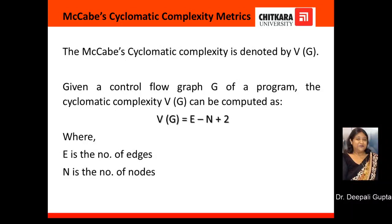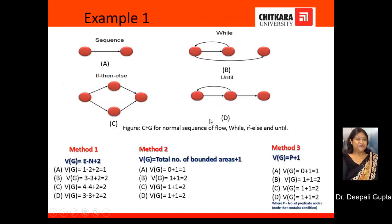Given a control flow graph G of a program, the cyclomatic complexity is denoted by V(G), which can be computed as V(G) = E − N + 2, where E is the number of edges and N is the number of nodes. We will compute the value of V(G) using three alternate methods — Method 1, Method 2, and Method 3.